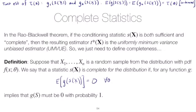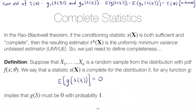If we suppose we have a complete statistic s(x), then there's really only one function of s(x) that is unbiased for whatever the target is — say, tau(theta). What we'll show here is that if s is a complete statistic, then g1 must be equal to g2, which means there's a unique function of a complete statistic that is unbiased for tau(theta). That is ultimately what we'll use when we find the uniformly minimum variance unbiased estimator.